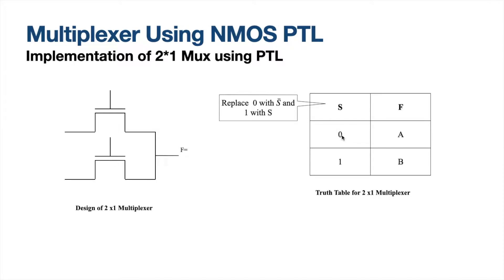Whenever the control signal is 0, we should have input A at the output. Whenever the control signal is 1, we should have input B at the output. Therefore, for a 2x1 multiplexer, we have two inputs A and B, and one will be available at a time at the output based on the control signal. The first step is to replace 0 with S̄ and 1 with S in the column S.